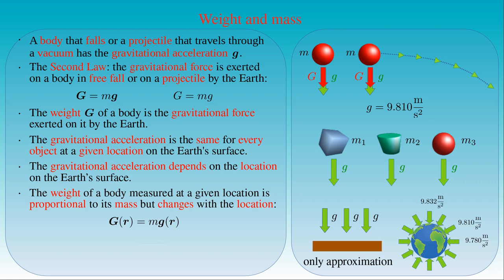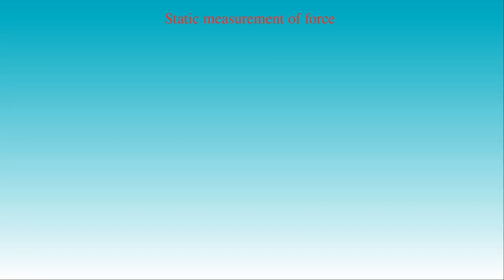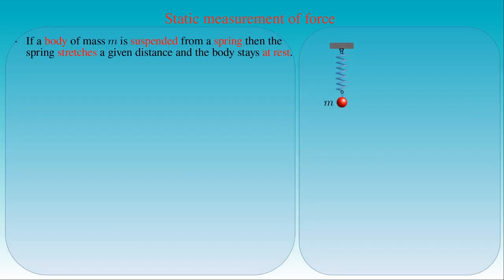Unlike mass, the weight is not exclusively a property of the bodies — rather, it is a force depending on the location on earth. The concept of weight allows us to measure force. The measurement of force based on balancing the weight of the bodies is called static measurement. One possible method for static measurement is the following: if a body of mass m is suspended from a spring, the spring stretches a certain distance and the body stays at rest. The second law of motion tells us that if the body is at rest — its acceleration is zero — then the net force acting on the body must vanish.